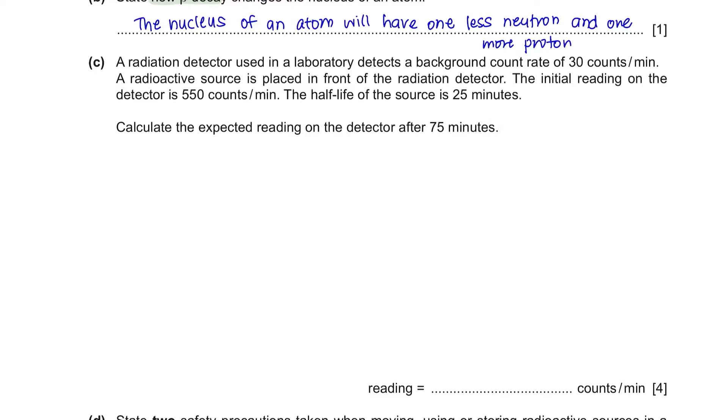Question C. A radiation detector used in a laboratory detects a background radiation rate of 30 counts per minute. A radioactive source is placed in front of the radiation detector. The initial reading on the detector is 550 counts per minute. The half-life of the source is 25 minutes. Calculate the expected reading on the detector after 75 minutes.